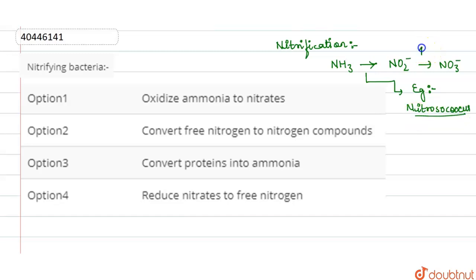Whereas, if we have the second step, which converts nitrite to nitrate, then this step is performed mainly by the Nitrobacter genus.